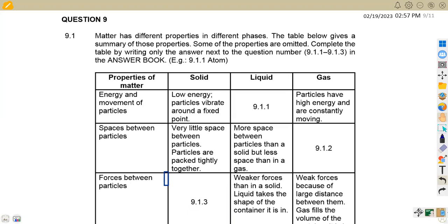We have questions that we are going to work on revising so that we can see how we are supposed to answer these typical questions. On 9.1 we are given that matter has different properties in different phases, the table below gives a summary of those properties. Some of the properties are omitted, complete the table by writing only answer next to the question.